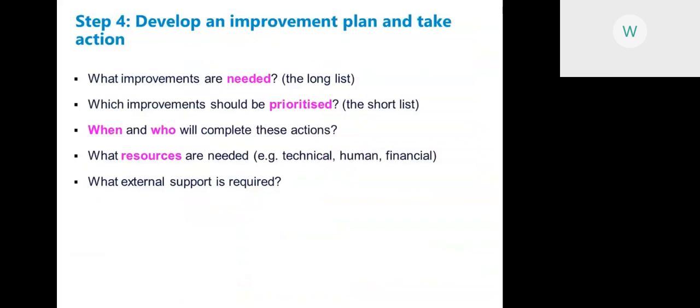Once you've identified the main problems and actions needed, the WASH FIT team develops an improvement plan and importantly takes action. From the long list of improvements identified, prioritize which should be done immediately (the shortlist), then decide when and by whom each action will be completed, what resources are needed — technical, human, or financial — and whether external support is required, such as someone from the district health office, a climate adaptation expert, a community member, or an engineer.